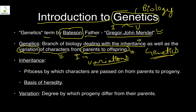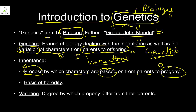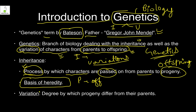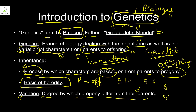Inheritance is a process by which characters are passed from parents to progeny — progeny and offspring are the same thing. This is the basis of heredity, which means the study of transmission of characteristics from parents to offspring. Variation is the degree by which progeny differ from their parents — for example, if your father is 5'10" and your mother is 5'6", you may be anywhere from 5 feet to 6 feet tall.